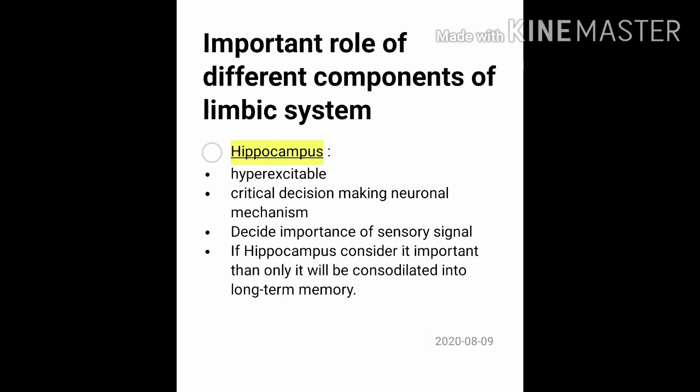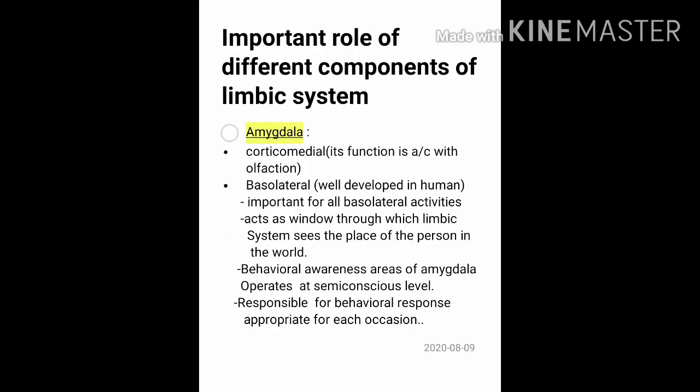Regarding the important roles of different limbic components: the hippocampus is hyperexcitable and acts as a critical decision-making neuronal mechanism — it decides the importance of sensory signals and whether they should be converted into long-term memory. The amygdala has two parts: corticomedial and basolateral. The corticomedial part is associated with olfaction. The basolateral part, well-developed in humans, is important for all behavior and acts as a window through which the limbic system perceives the person's place in the world, operating at a subconscious level to assess whether behavior is appropriate for an occasion.